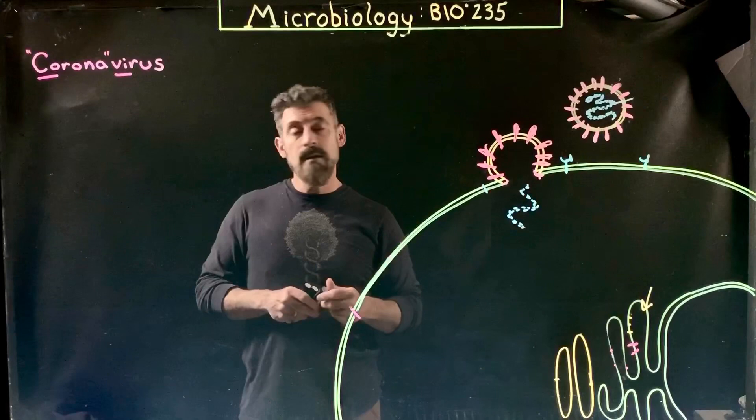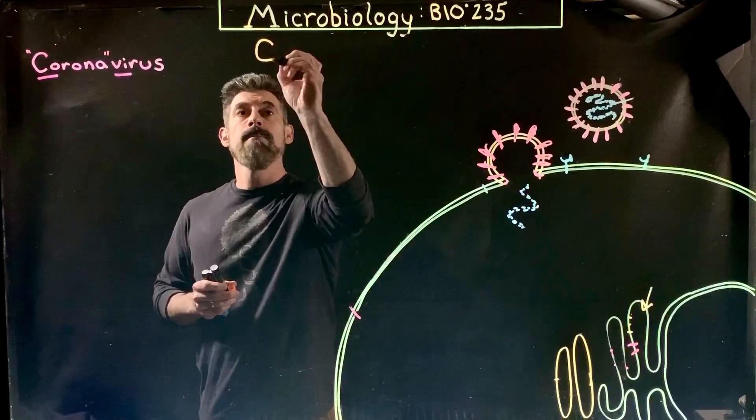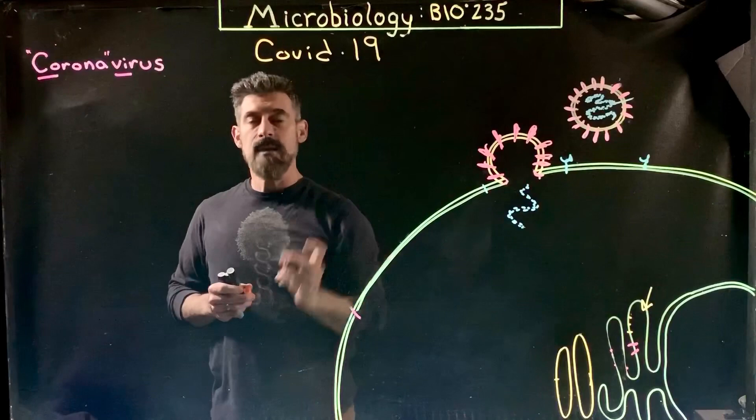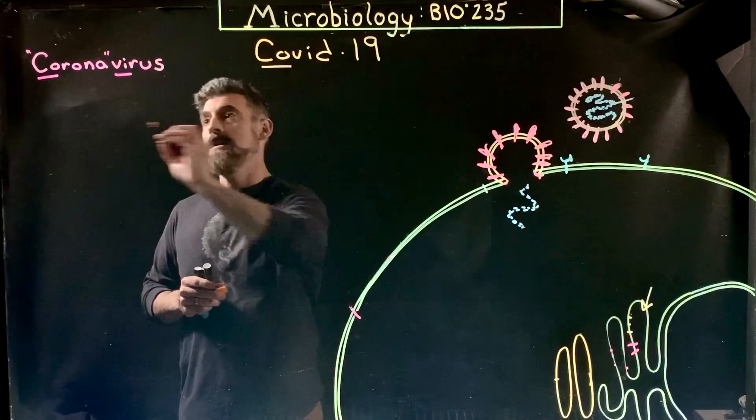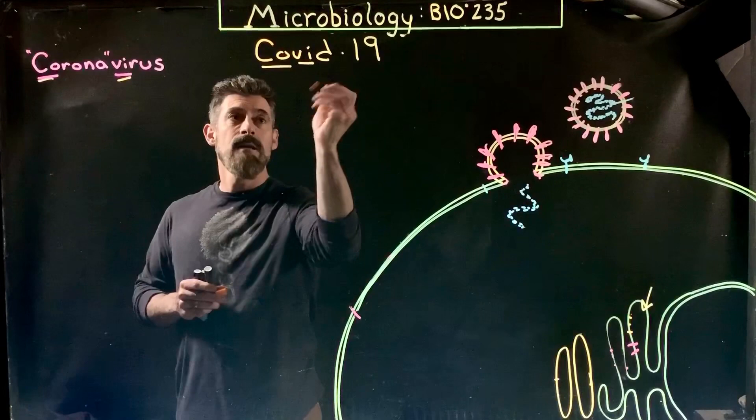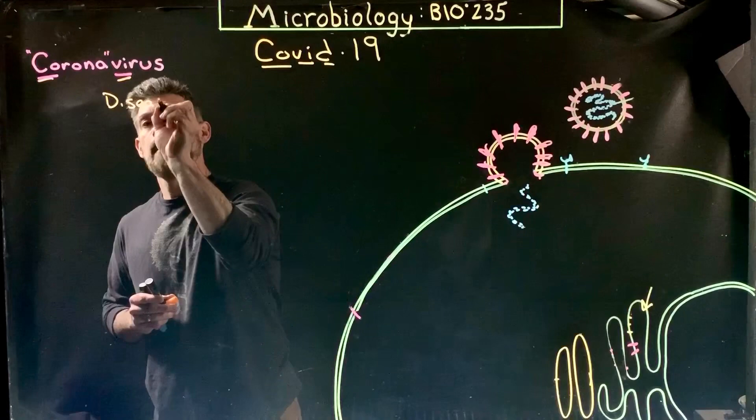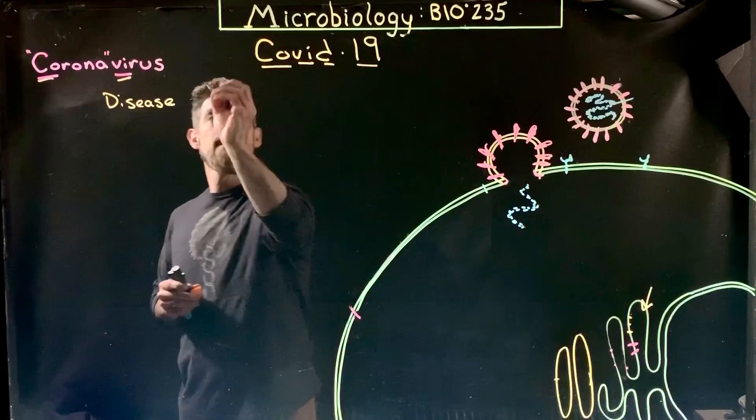First off, the name — everyone's talking about a coronavirus and we use the term COVID-19 to discuss it. So what does that actually mean? CO is for corona, VI is for virus, D is for disease, and then the 19 stands for really 2019.